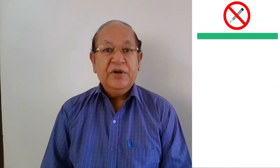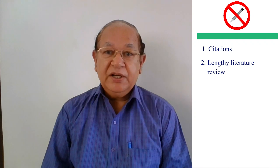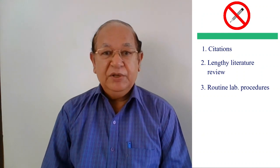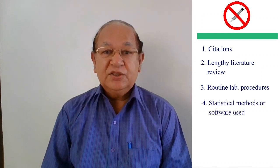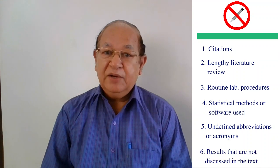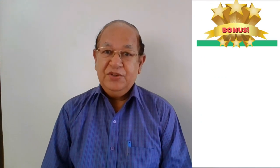Now, what are the common mistakes in writing an abstract? The abstract usually carries a strict word count limit, and combining all important aspects into 250 words or less is a tough job. To reduce word count, avoid: number one, citations; number two, lengthy literature review, as readers are more interested in your results; number three, routine laboratory procedures that are well established; number four, statistical methods or software used; number five, undefined abbreviations or acronyms; and number six, results or interpretations not discussed in the text.